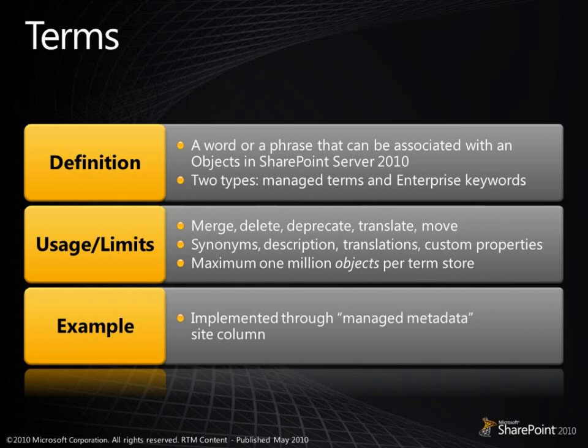When talking about scale, the targets were one million objects per term store — that includes terms, term sets, and groups, not one million terms exclusively. There can be 30,000 items per term set and 1,000 term sets maximum. These are the tested supported scale points, and we only support maxing out one axis of these three values.